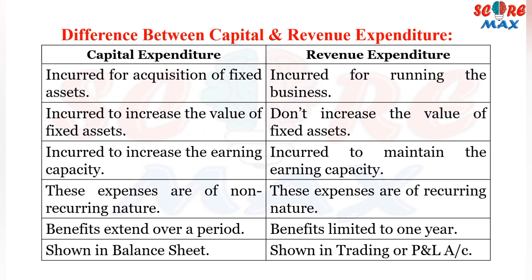Now we will see the difference between capital and revenue expenditure. Capital expenditure is incurred for the acquisition of fixed assets, whereas revenue expenditure is incurred for running the business — basically for the day-to-day operations. The next difference is that capital expenditure is incurred to increase the value of fixed assets, such as extensions, while revenue expenditure maintains the current operations.